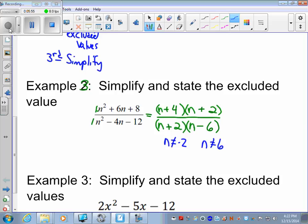And now we simplify. In common with numerator and denominator, we have n plus 2 divided by n plus 2. That's 1. Nothing else in common. We have n plus 4 divided by n minus 6 with n cannot equal negative 2 and 6.